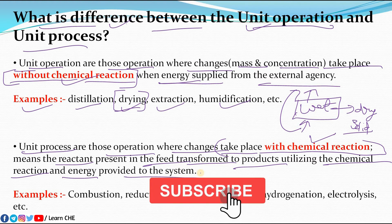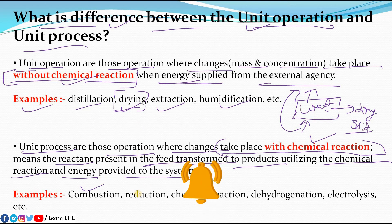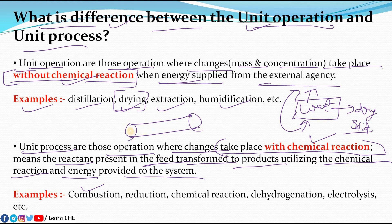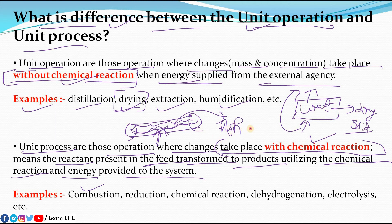For example, combustion: suppose we supply energy to wood. As the ignition temperature is reached, the wood catches fire and burns. After the combustion, the wood converts into ash as the final product and we get energy from that wood. Here the initial and final products are different, and a chemical reaction takes place. This is an example of unit process.